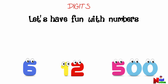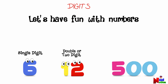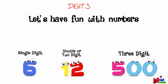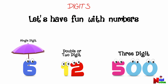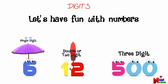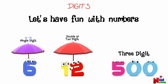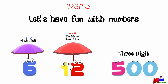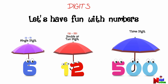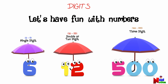Depending on how many digits we use, we can have single digit or double digit numbers. Numbers from 0 to 9 are single digit numbers. Double digit numbers, or two digit numbers, are numbers that have two digits. Numbers from 10 to 99 are double digit numbers. Three digit numbers are numbers that have three digits. Numbers from 100 to 999 are three digit numbers.